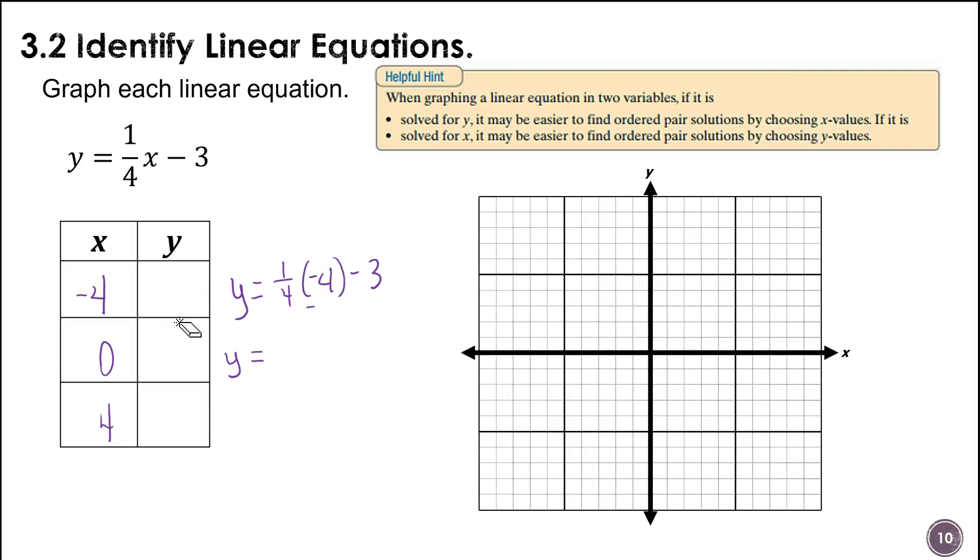I'm just doing this like I would in the classroom when I make silly errors like that. So, 1 fourth times negative 4 is negative 1. Negative 1 minus 3 is negative 4. You guys are doing the same thing my students do. Hey, why did you write 1 half? Okay, I was supposed to write 1 fourth. That's what happened. Alright, so 1 fourth times 0 minus 3. So that would be 0 minus 3, which is negative 3. And then last, we have 1 fourth. I'm trying to write 1 half again. 1 fourth times 4 minus 3. 1 fourth of 4 is 1. 1 minus 3 is negative 2.